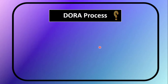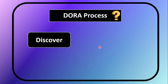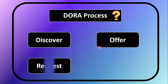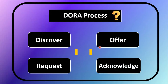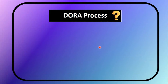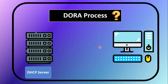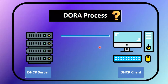The DORA process is a key part of DHCP. It is a sequence of events in DHCP. The abbreviation DORA stands for Discover, Offer, Request, and Acknowledgement. We will see in detail how the DORA process works and how an IP address is assigned to the client using the server.